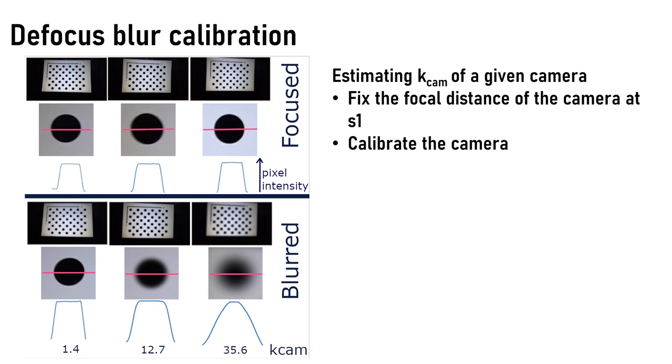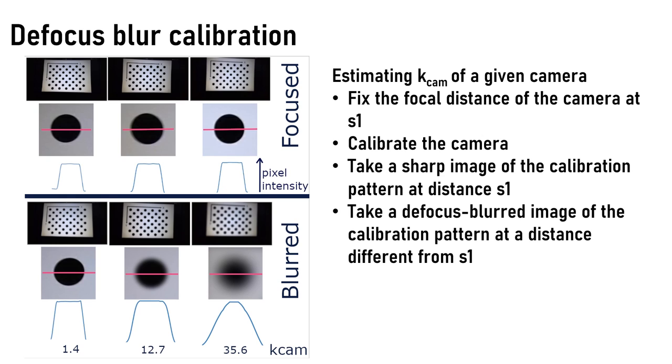We place our asymmetrical calibration pattern in front of the camera at the distance of S1 and take a photo. Because the camera is focused at S1 distance, the photo looks very sharp. Then we change the distance of the calibration pattern to a different distance from S1, and because this new distance is different from S1, the image of the calibration pattern will be blurred.